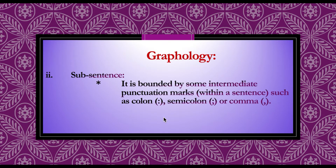The second rank scale is sub-sentence. A sub-sentence is bounded by intermediate punctuation marks within a sentence, such as a colon, semicolon, or comma. These punctuation marks occur within a sentence in the writing system, making sub-sentence a part of, but not a full, sentence.